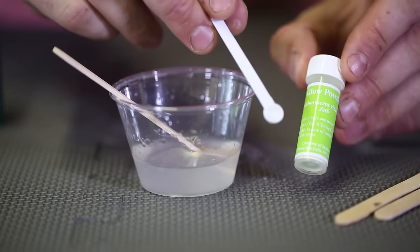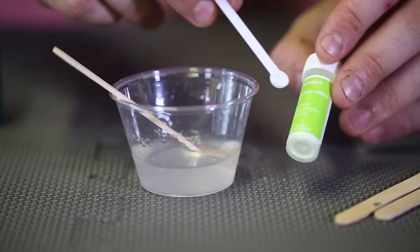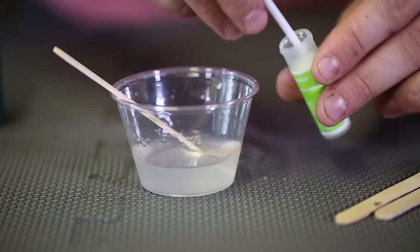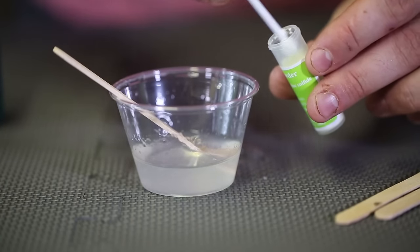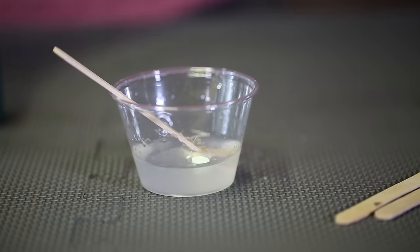Then we're going to add one scoop of glow powder or phosphorescent zinc sulfate. So let's open it up and do just one little scoop. Just like that. Boom. Throw it in there and mix it all up again.